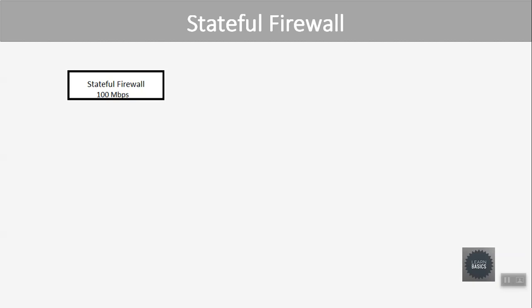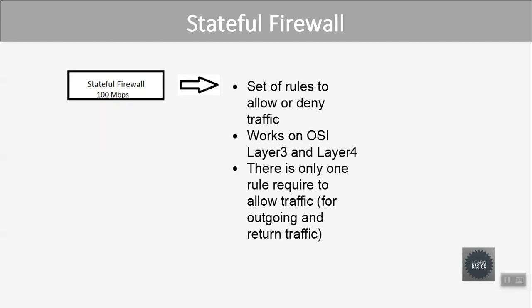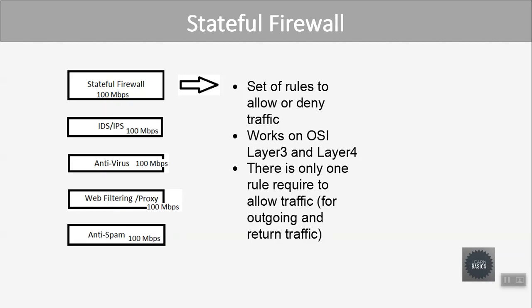Now let's look at what a stateful firewall is. Taking an example of 100 Mbps bandwidth — a stateful firewall is a set of rules that allow or deny traffic based on OSI Layer 3 and Layer 4. It requires only one rule to allow outgoing and return traffic, whereas a stateless firewall requires two separate rules. It operates at the perimeter level to allow or deny traffic.